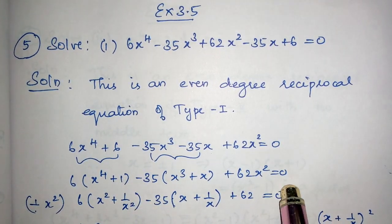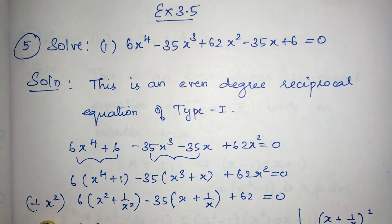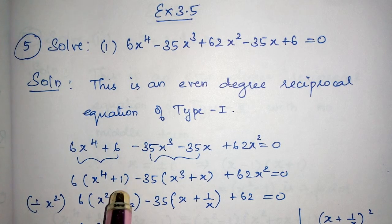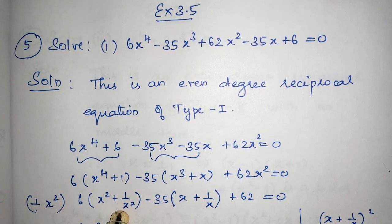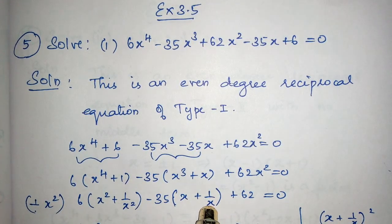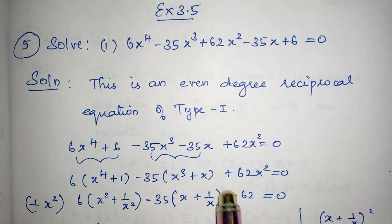Now this equation is supposed to be divided by x². So x^4 divided by x² gives x². 1 divided by x² is 1/x². x³ divided by x² is x, and x divided by x² is 1/x. Now I have got x² + 1/x².